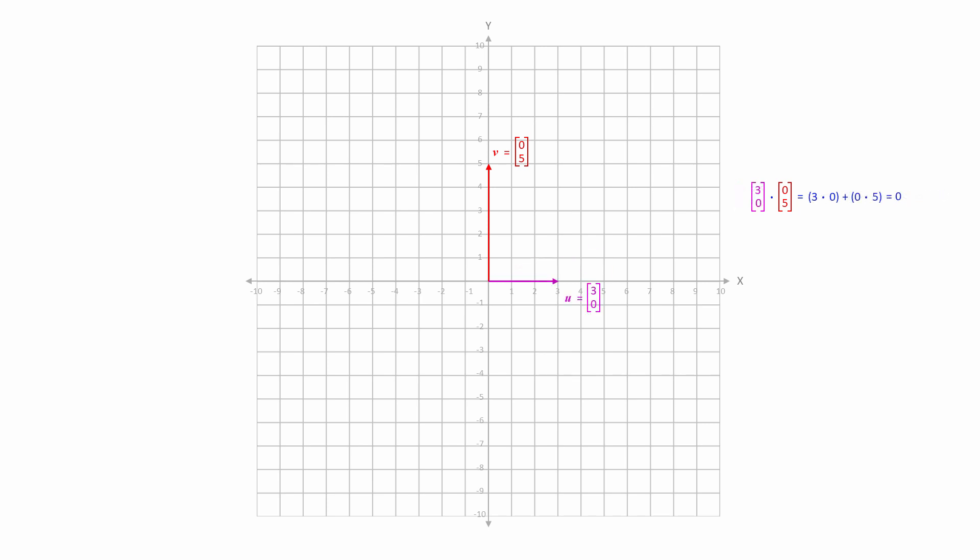Increase the angle some more and the dot product continues to shrink. Notice that when the vectors are at right angles to each other, that is, when they are orthogonal, the dot product is zero.